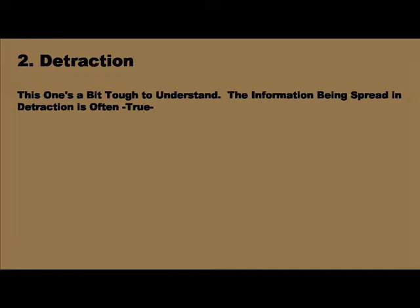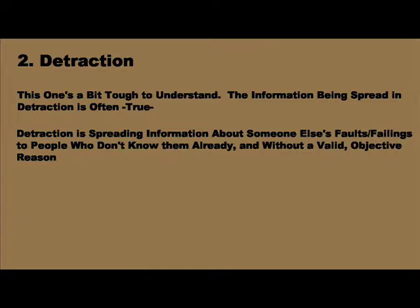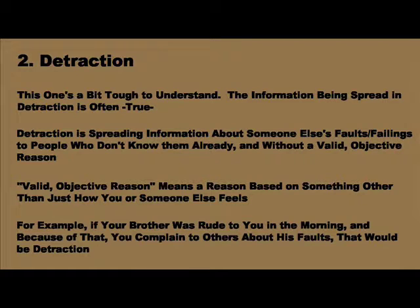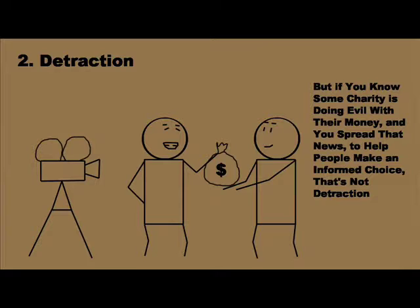2. Detraction. This one is a bit tougher to understand. In detraction, the information you're spreading is often true. Detraction is spreading information about another person's faults and failings to a person who didn't know them without a valid, objective reason — meaning a reason that's based on something other than just how you or someone else feels. For example, if you're feeling upset because your brother was rude to you this morning, complaining to people about his failings just for that reason would be detraction. However, if you know that some charity is doing evil with their money and you spread the news to help people make an informed decision about whether or not to give to that charity, that's not detraction because your reason is valid and objective.